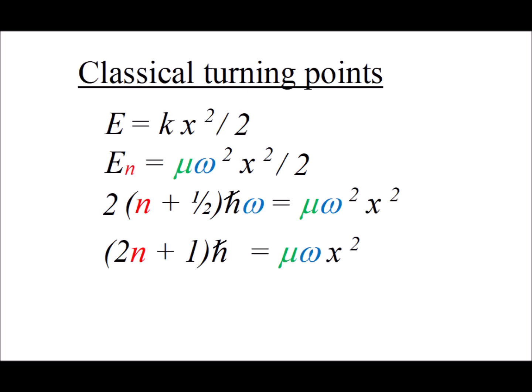The turning points of the classical oscillator are those points where the energy is entirely in the form of potential energy. The potential energy is equal to k x squared over 2. We set that energy equal to the energy for our particular state of the quantum harmonic oscillator, and we make the substitution for the force constant k equal to mu times omega squared. Multiplying each side by 2 and substituting in the values for E sub n gives us 2 times the quantity n plus a half times h-bar omega is equal to mu omega squared times x squared.